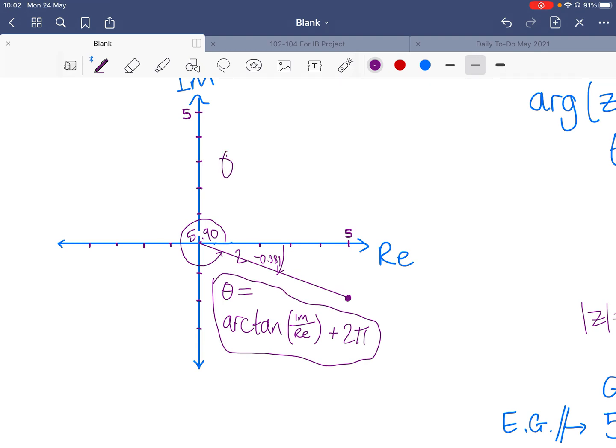We saw already in the first quadrant that you can just do arctan, and it won't be a problem.